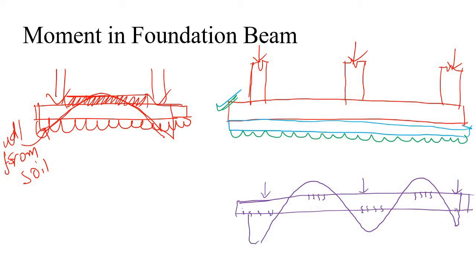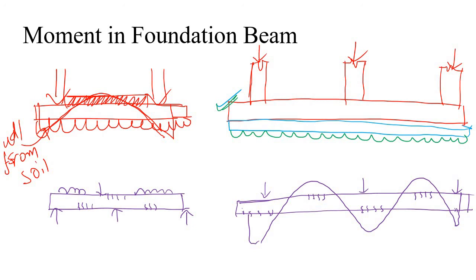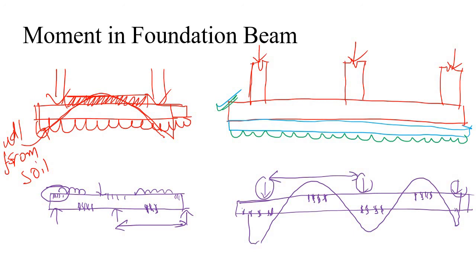In a normal beam, the load comes from the top, so cracks at the support zone appear at the top. But in a foundation beam, at the support zone, the cracks are at the bottom — that is the major difference. At the span, a normal RCC beam cracks at the bottom, but for a foundation beam the cracks at the span are at the top. So the detailing of the foundation beam is completely opposite compared to the normal RCC roof beam.